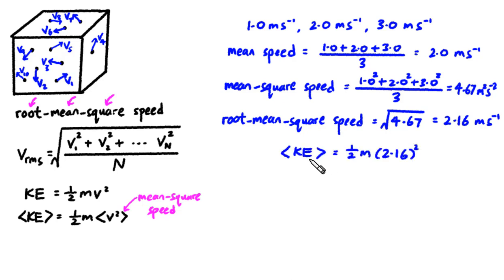If you want to calculate the average KE of these 3 gas particles, all you have to do is to do half m times the root mean square speed squared. It's the root mean square speed that you need to put into the v in half mv square if what you want is the average KE.